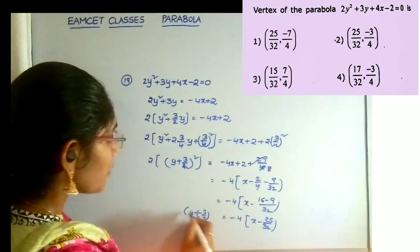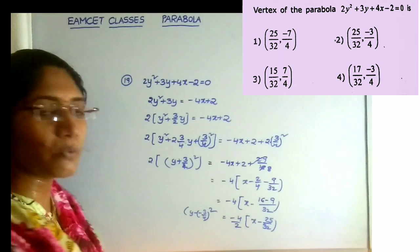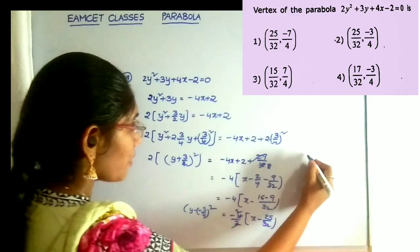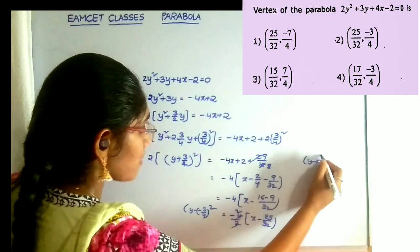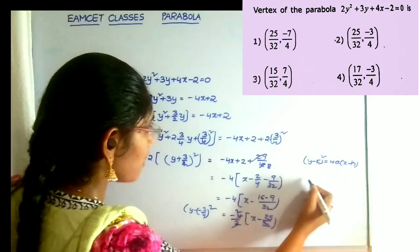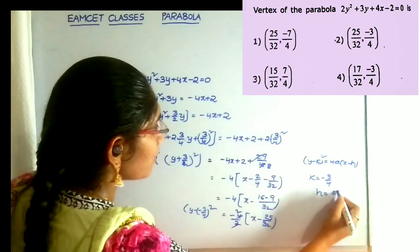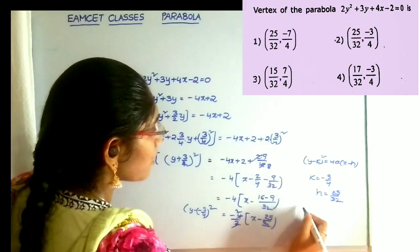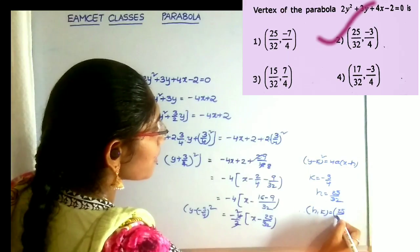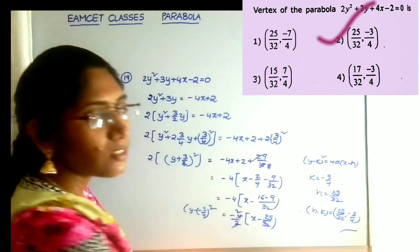Therefore, this value equals y minus of minus 3/4 whole squared is equal to minus 4/2 into x minus 25/32. Clearly this is in the form of y minus k whole squared is equal to minus 4a into x minus h. Here k is equal to minus 3/4 and h is equal to 25/32. Therefore the vertex h comma k is equal to 25/32 comma minus 3/4. That's all, and this is the second option.